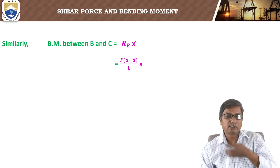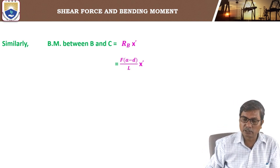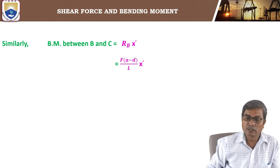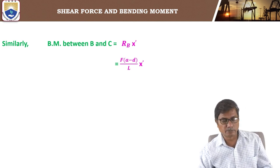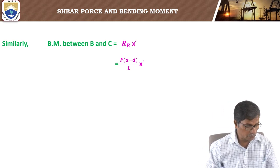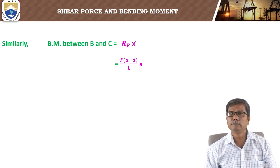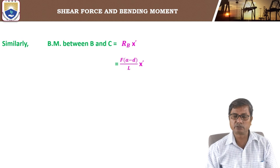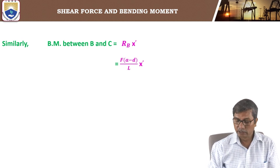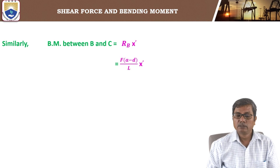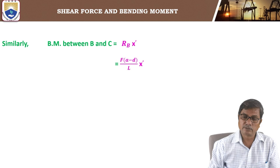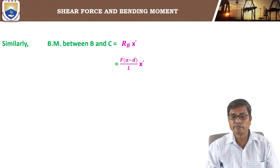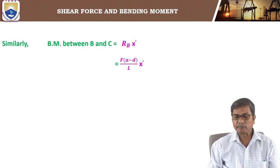Similarly, the bending moment equation between B and C is RB into x-dash, which equals F(A minus D) by L into x-dash. The limits for x-dash are from 0 to b. Here also it varies linearly, increasing from 0 at B to F(A minus D) by L into b at C.